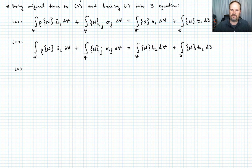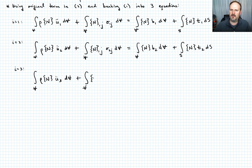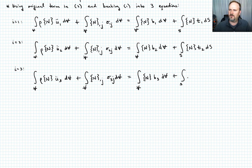And now the same for i equals 3: integral over the volume of rho N u3 double dot dV, plus integral over the volume of N partial with respect to x_j of sigma_3j dV, equals integral over the volume of N times b3 dV plus integral over the surface of N times t3 dS. We'll collectively call these equations 3.